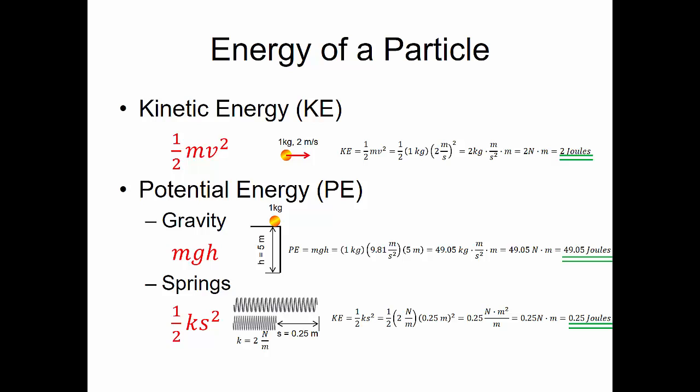We've already talked about the different pieces of energy for a particle. We have kinetic energy, which we represent with one-half the mass times the velocity squared; potential energy due to gravity, mass times gravity times the height; and the potential energy due to springs, which is one-half the spring constant times the displacement squared. Now let's put all of this together.